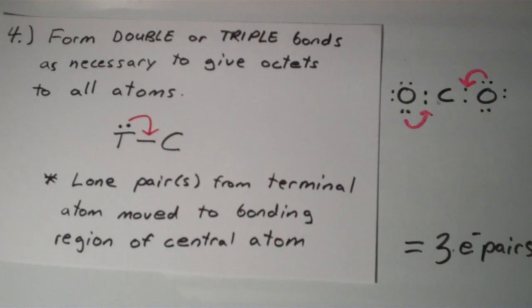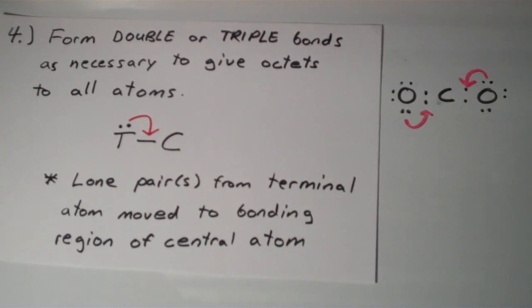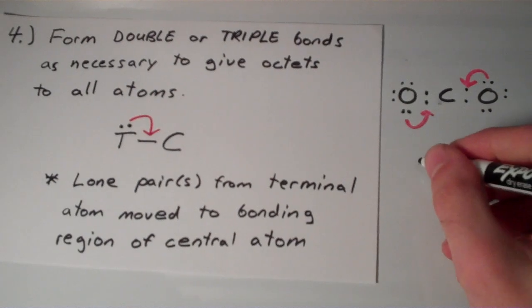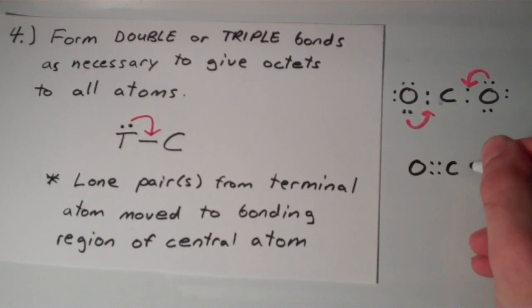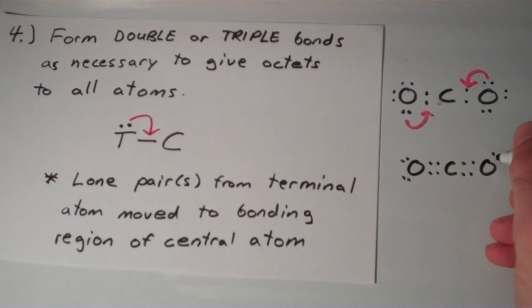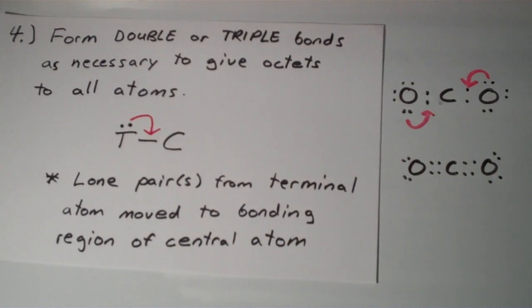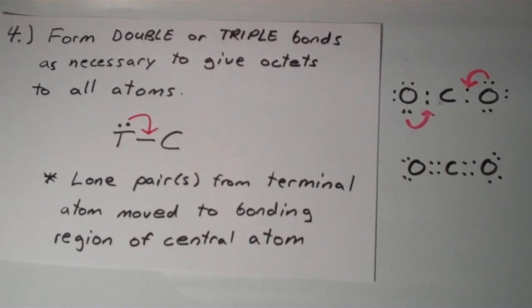And what that is going to do is it's going to form two double bonds. So we're going to have something that looks like this. That is the Lewis structure for carbon dioxide.